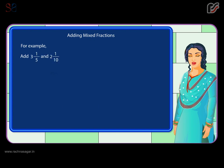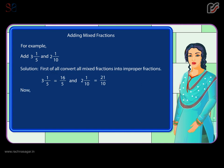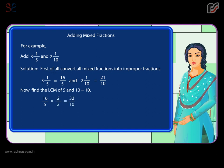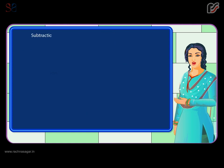Adding mixed fractions. For example, add three and one by five, and two and one by ten. First convert all mixed fractions into improper fractions: three and one by five equals sixteen by five, and two and one by ten equals twenty-one by ten. Find the LCM of five and ten, which equals ten. Sixteen by five becomes thirty-two by ten. Thirty-two by ten plus twenty-one by ten equals fifty-three by ten, which equals five and three by ten.